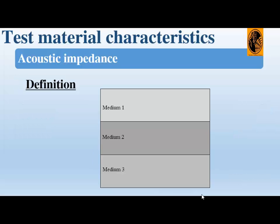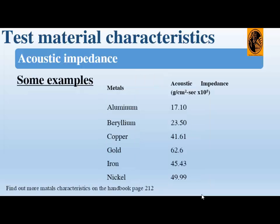As the ultrasound wave crosses from one medium to the next, each with different acoustic impedance, some of the wave is reflected back at each crossing. You can see the two green arrows in the image. Therefore, multiple reflected waves return to the probe.